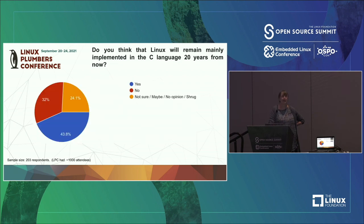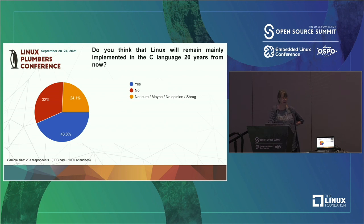Another question came from all the Rust talks and security/safety aspects at Plumbers last week: do you think Linux will remain primarily implemented in C? 43–44% said yes, but about a third said no, and there are really good discussions going on around Rust and how to make the kernel's security safer.